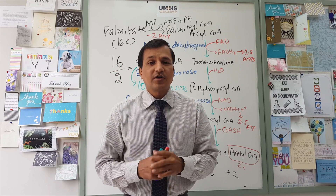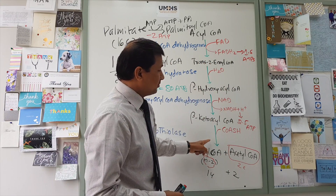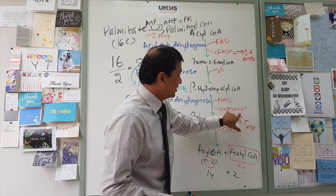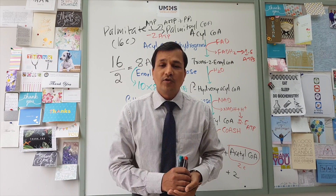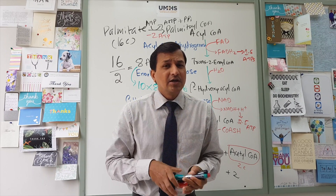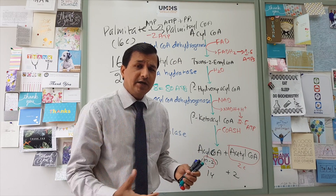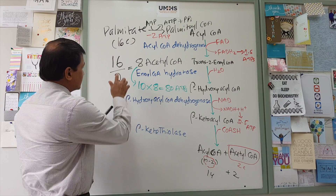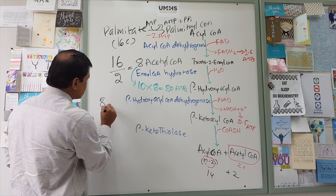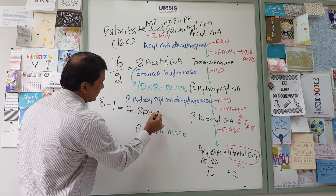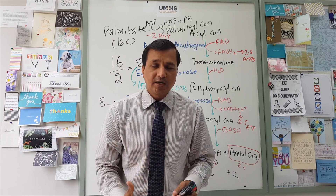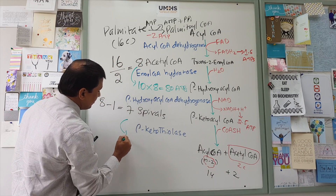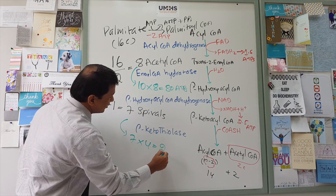Don't forget to add the ATPs coming from NADH and FADH2, because in each spiral of beta oxidation you get 1 NADH and 1 FADH2. FADH2 gives you 1.5 ATPs and NADH gives you 2.5 ATPs, so that is 4 ATPs per spiral. You then need to calculate how many spirals it takes to produce 8 acetyl-CoAs. Take the number 8 and subtract 1, giving you 7. So palmitoyl-CoA undergoes 7 spirals to release 8 acetyl-CoA molecules.